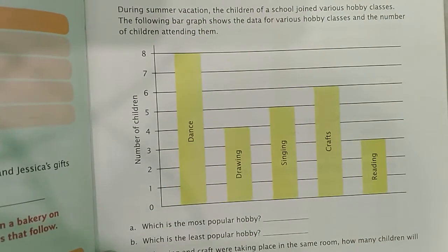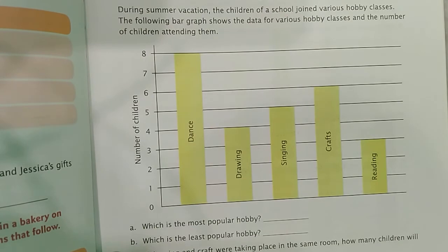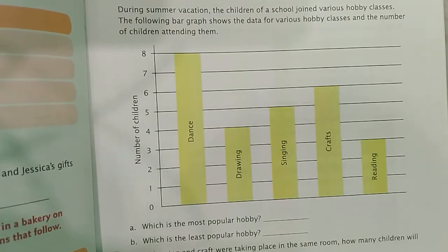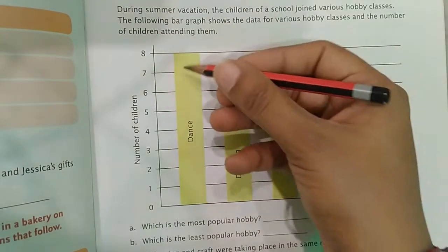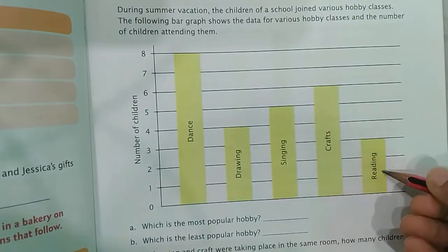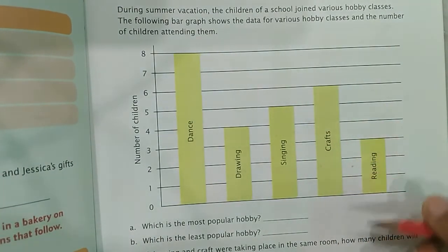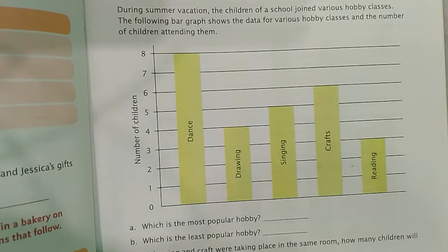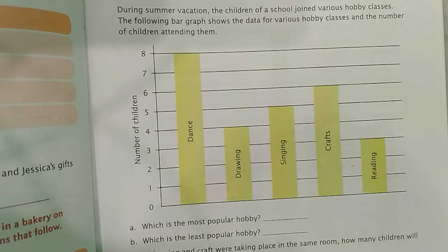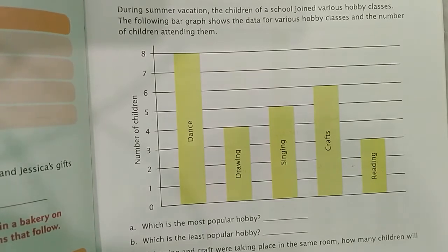Next is bar graph. A bar graph represents information through bars of different heights. These are the bars of different heights. Question: during summer vacation, children of a school joined various hobby classes. The following bar graph shows data for various hobby classes and the number of children attending each.